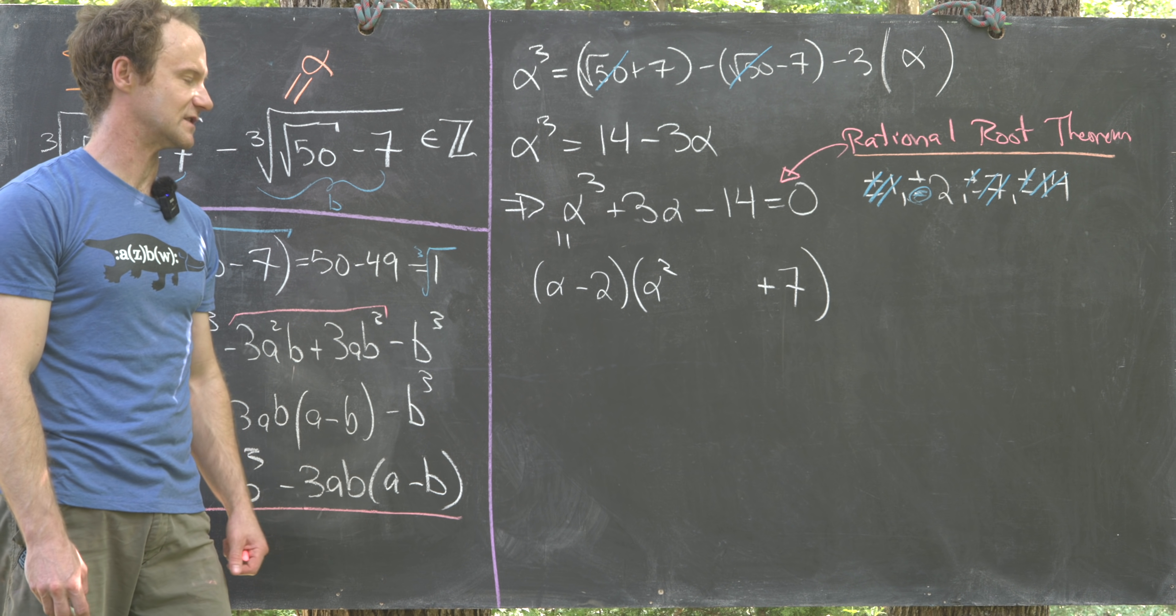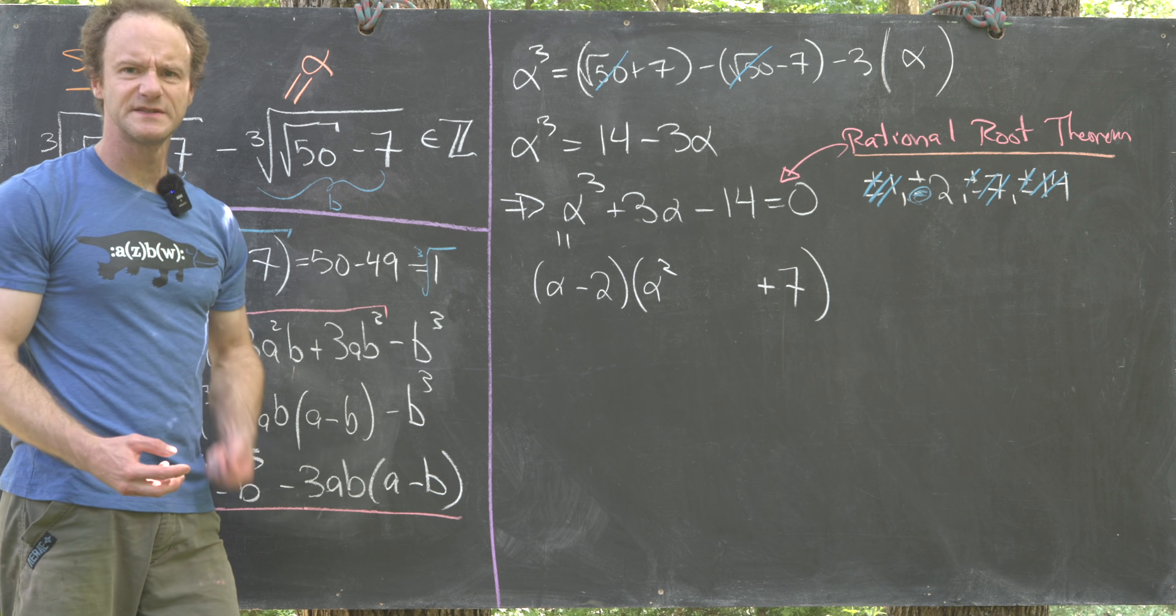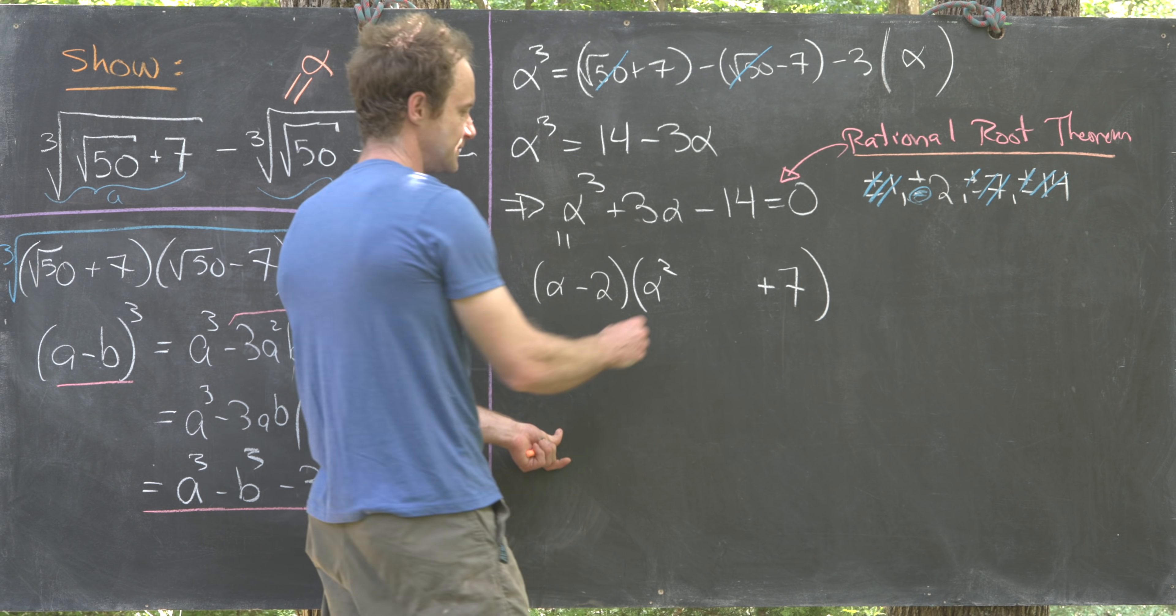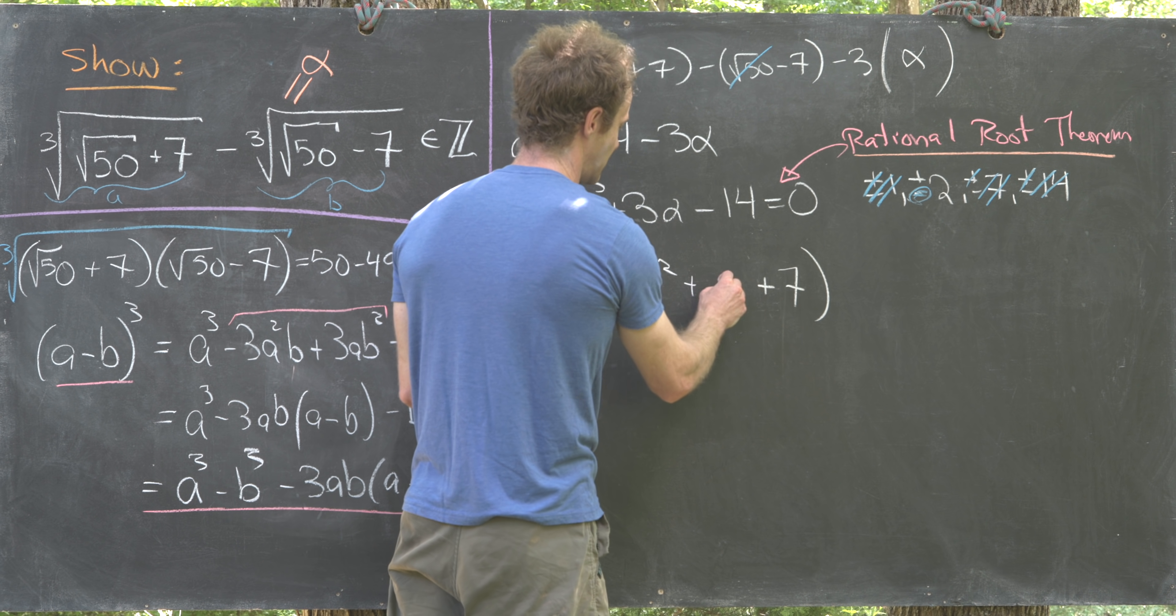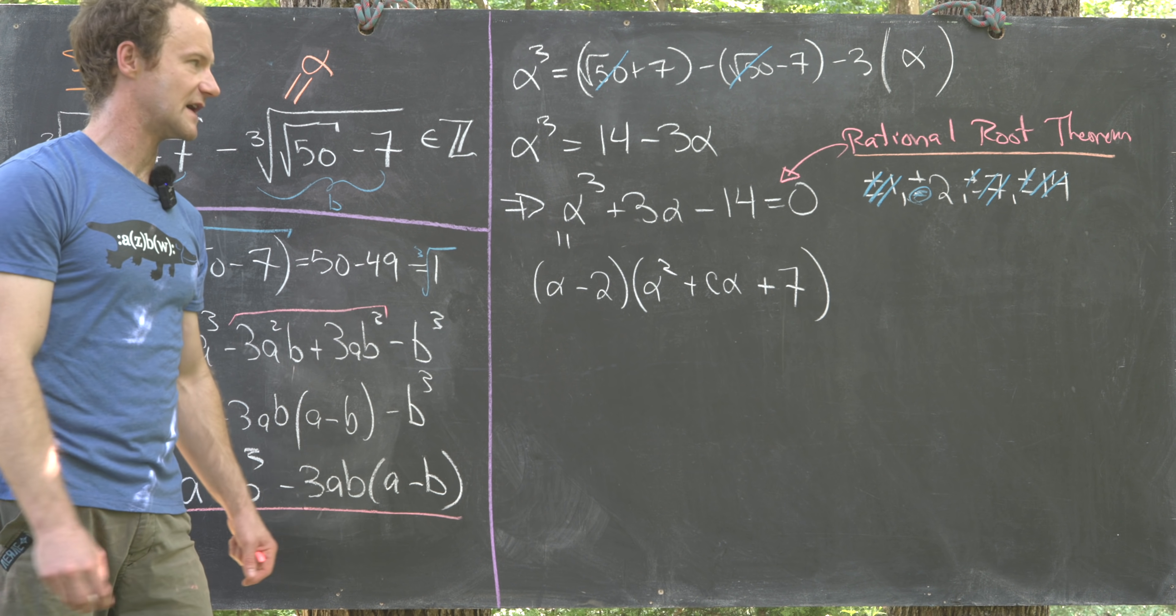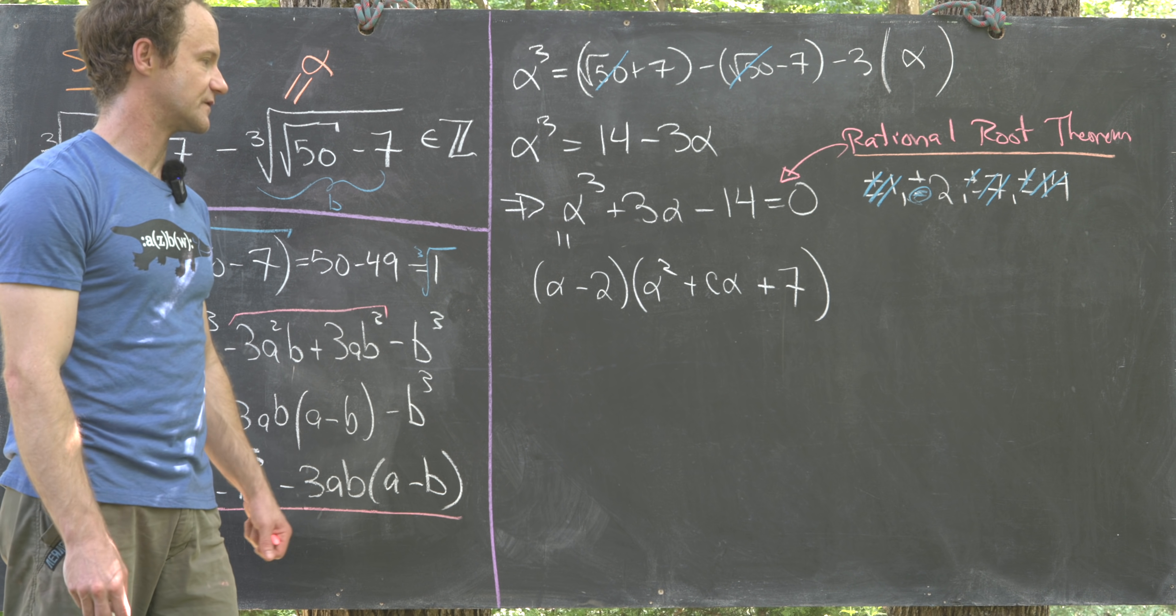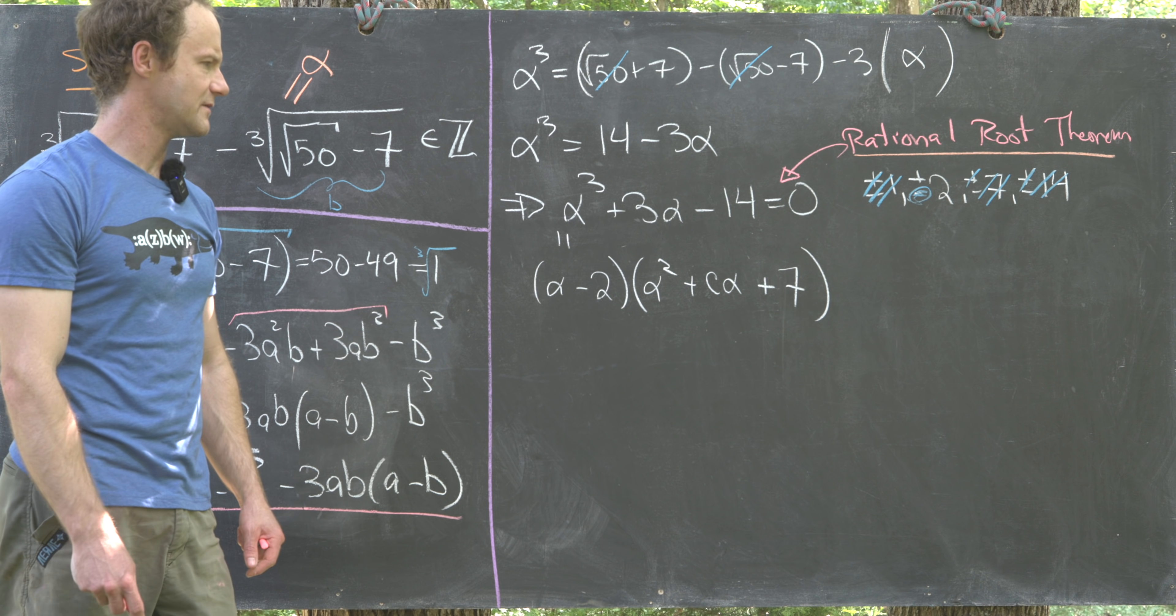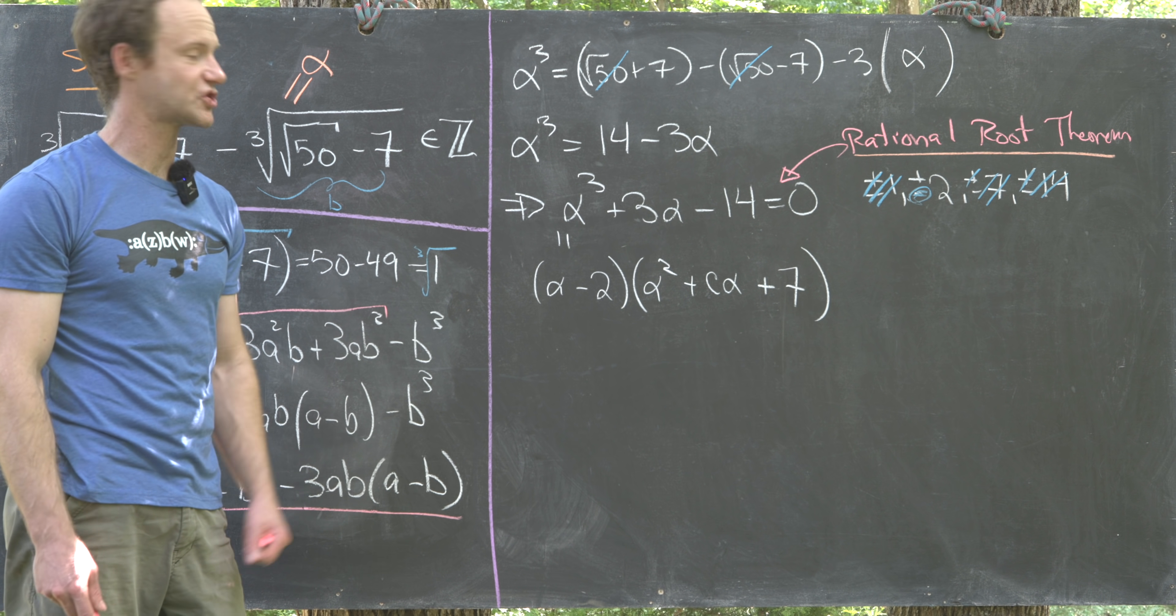Now we just have to figure out the linear term. Let's do that by guessing and building an equation. I'm going to write this as plus c times alpha and then let's multiply this out and build an equation for c. We don't need to completely multiply this out. We could just focus on the coefficient of alpha.